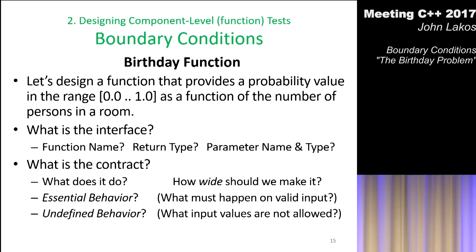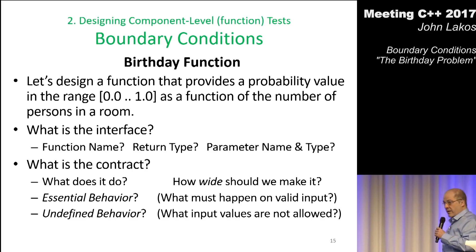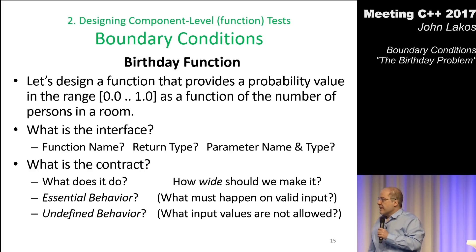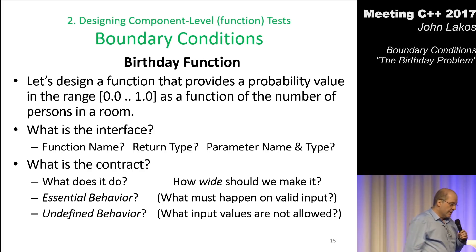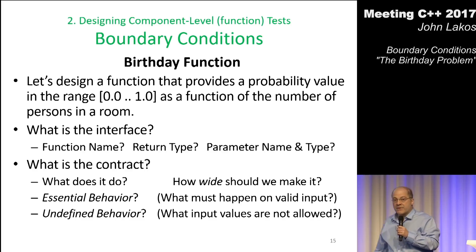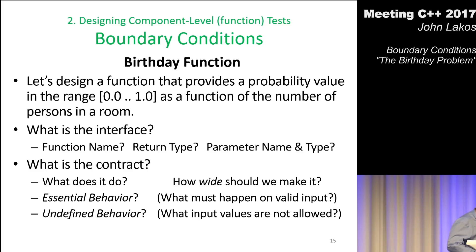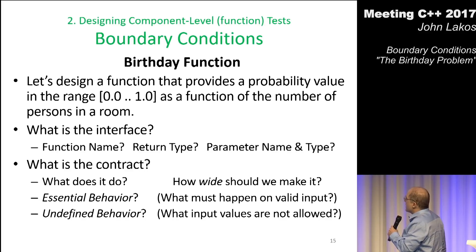Now we have to think about things in Volume 2, like what does the interface look like — what's the contract? Early on I was thinking about contracts for Bloomberg, and finally now in 2017, 18, and 19 we're getting to contracts in C++, just like I was thinking about allocators in 1997 and finally in 2017 we have real allocators in C++. Things take a while to get done, especially when you have a committee.